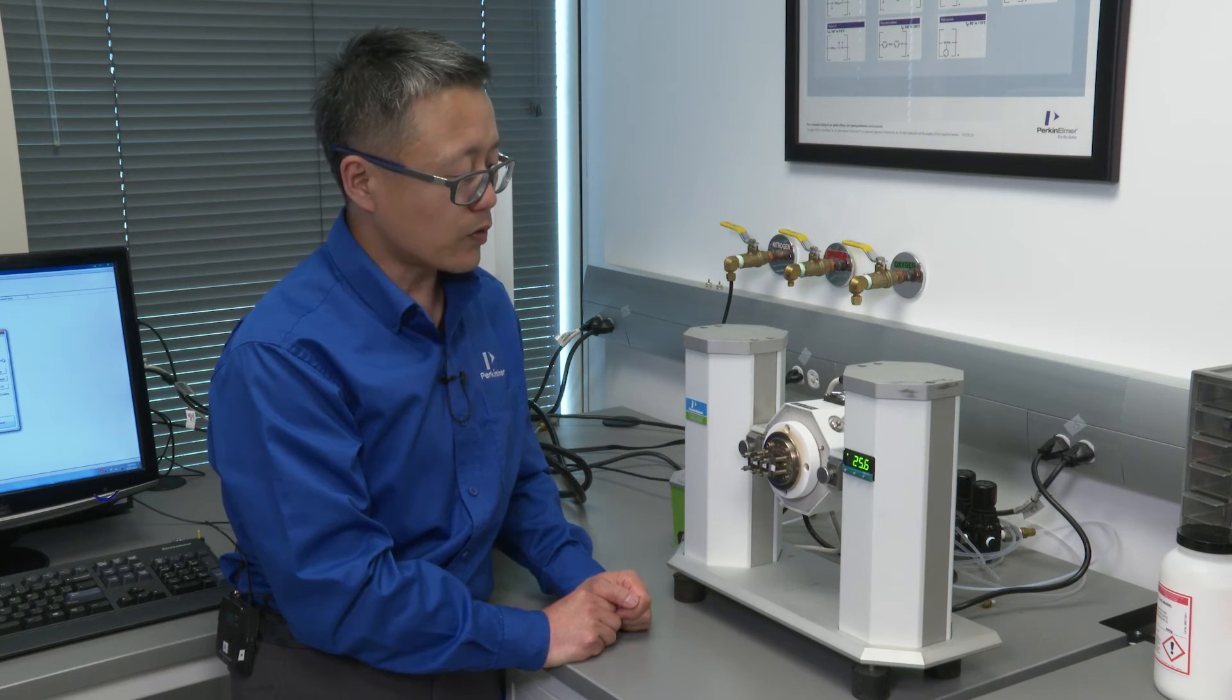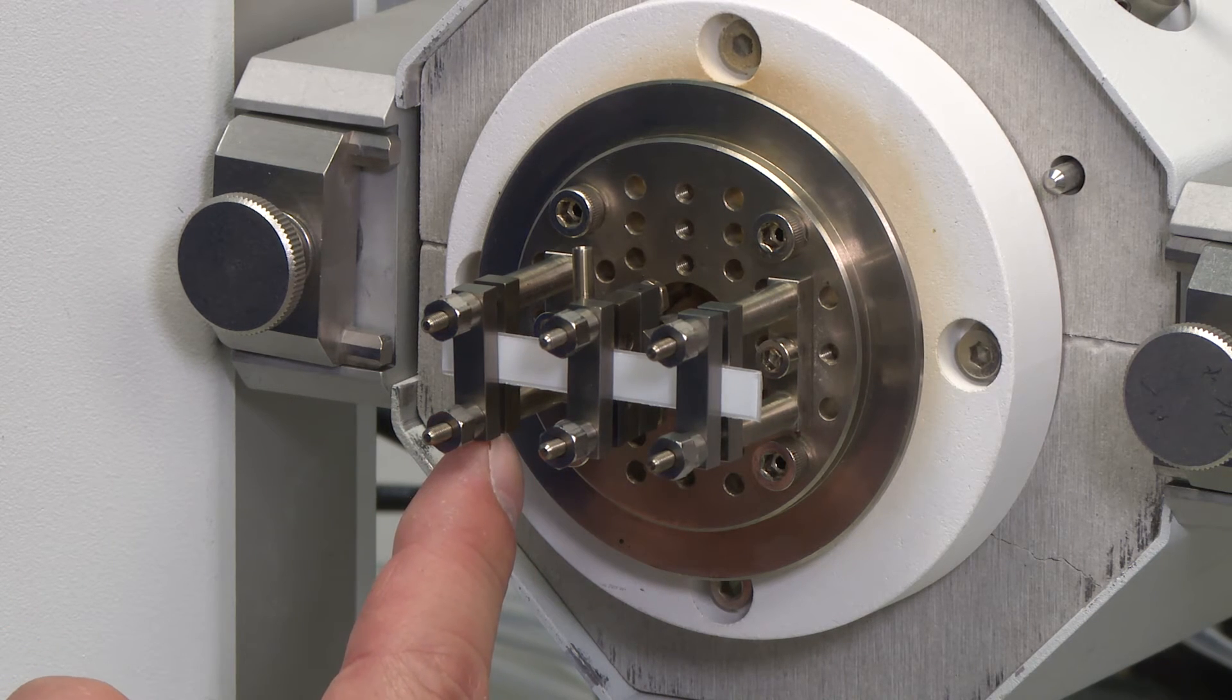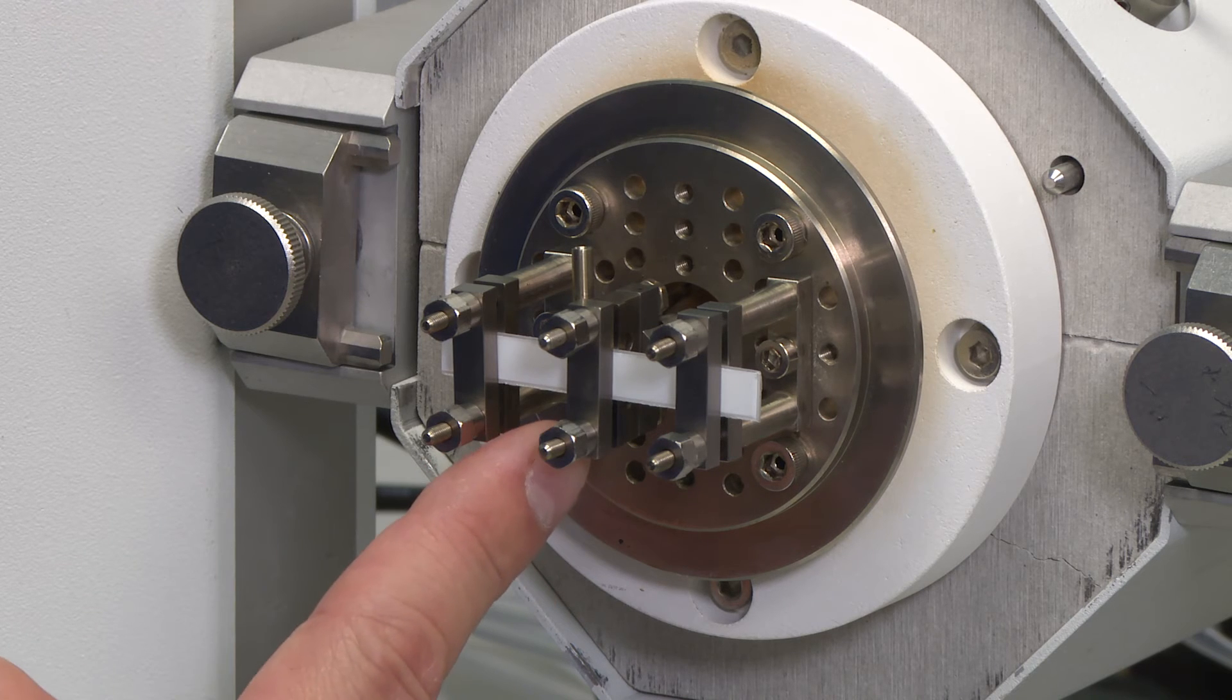Now you can use the caliper to measure the sample length. The sample length for dual cantilever bending is between this edge of the fixed pillar and this edge of the moving probe.